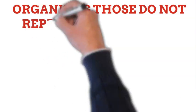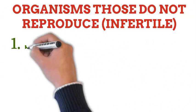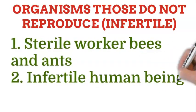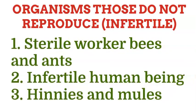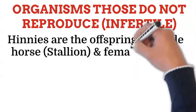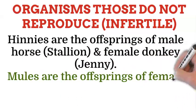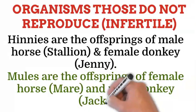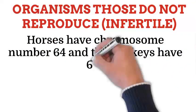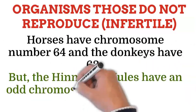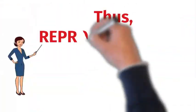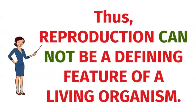However, there are many organisms that do not reproduce — they are infertile. For example, sterile worker bees and ants, infertile human beings, hinnies and mules. Hinnies are the offspring of a male horse (stallion) and a female donkey (jennie), while mules are the offspring of a female horse (mare) and a male donkey. Horses have chromosome number 64 and donkeys have 62, but hinnies and mules have an odd chromosome number of 63, so they cannot reproduce. Thus reproduction cannot be a defining feature of a living organism.